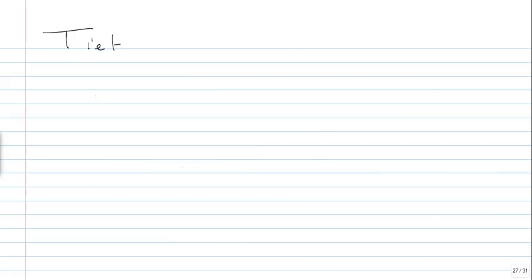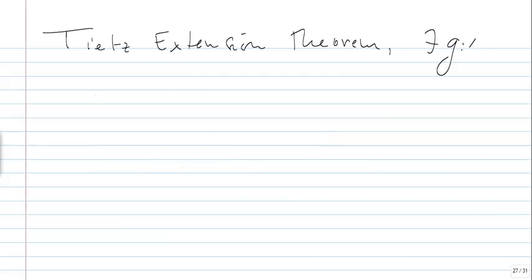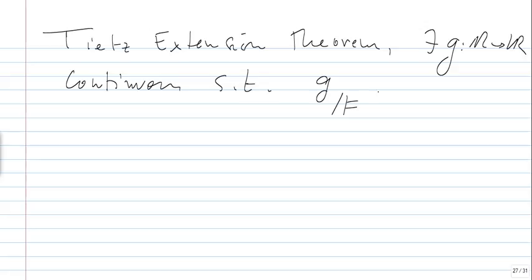Using Tietze's extension theorem again, there exists G from R to R continuous such that G restricted to F is exactly F restricted to F. That's exactly what we wanted: a continuous function from R to R such that F equals G on F, and the measure of E minus F is less than epsilon. This completes the proof that Lusin's theorem holds when the measure is finite.